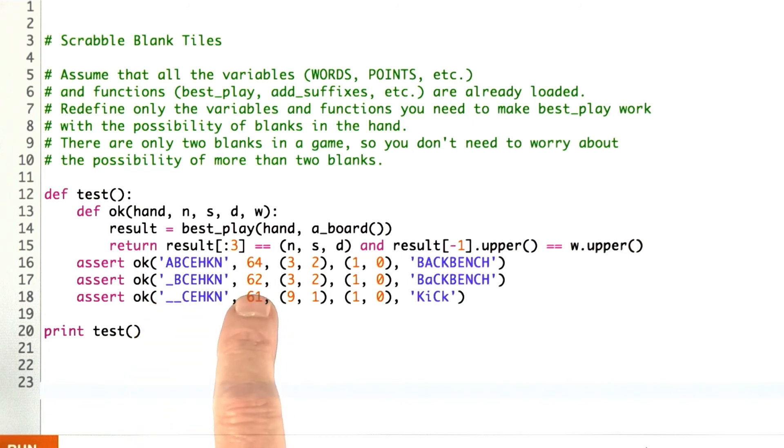When one of the letters is a blank, you actually score a little bit less because the A scores no letter points. Now, I've chosen to show here the lowercase letter to indicate where the blank is played, but your function that returns best_play doesn't necessarily have to return a representation like that. It could have returned a blank character there or something as long as we know that the score is correct and the best play is correct.